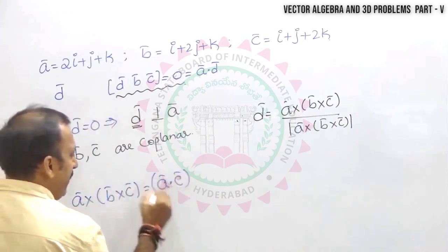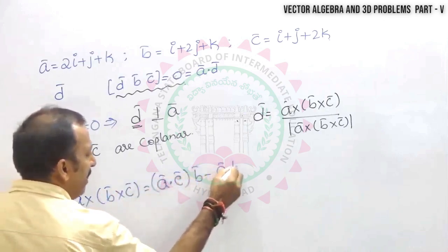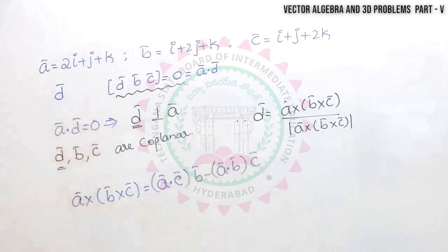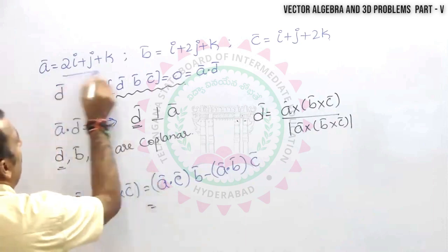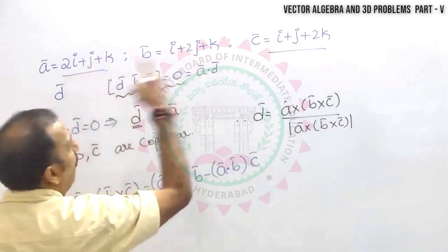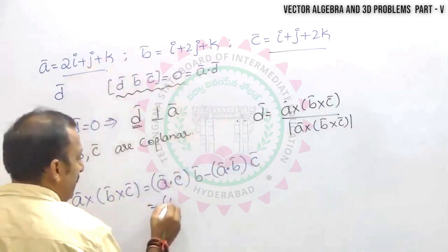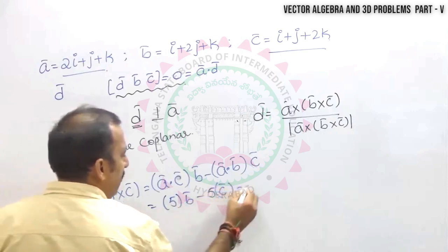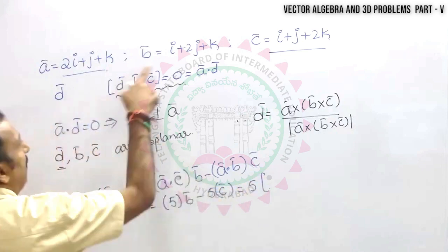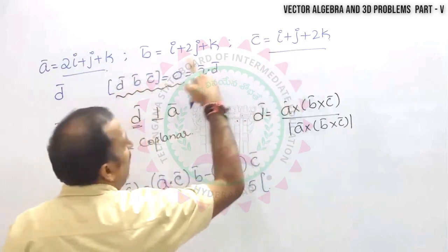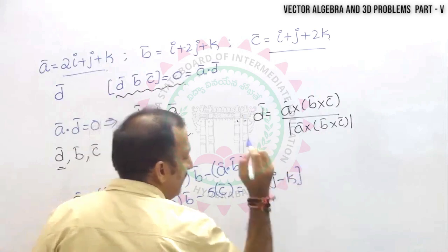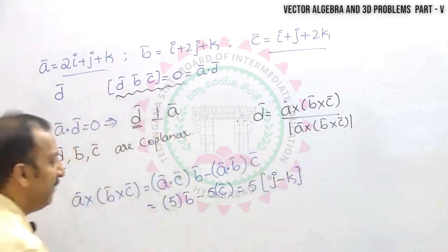a × (b × c) = (a·c)b̅ − (a·b)c̅. The value of a·c = 2+1+2 = 5, and a·b = 2+2+1 = 5. So this becomes 5b̅ − 5c̅ = 5(b̅ − c̅). Now b̅ − c̅ = (i+2j+k) − (i+j+2k) = j − k. Therefore a × (b × c) = 5(j̅ − k̅).